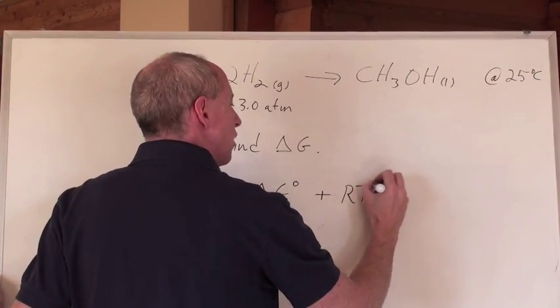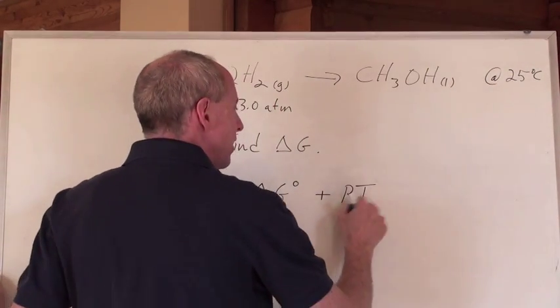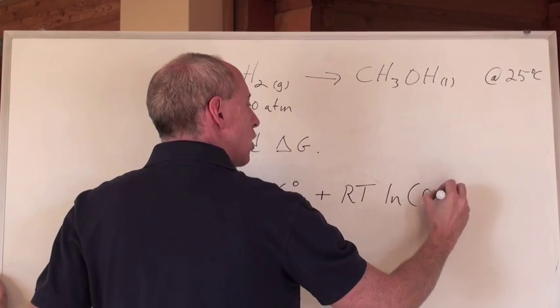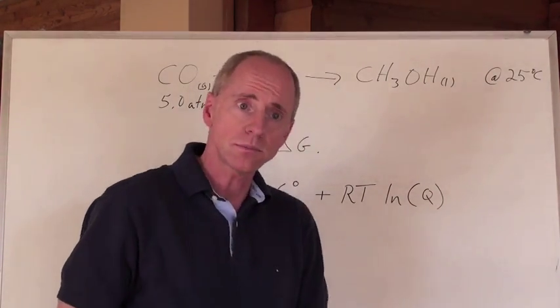Now, I'm not going to go through the derivation of this. You can, by the way. It's just too much. RT times the natural log of Q. Well, you don't have to write in brackets there. I could have just wrote Q.